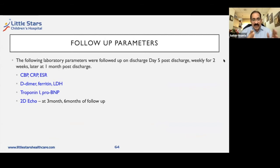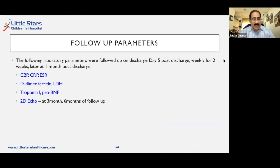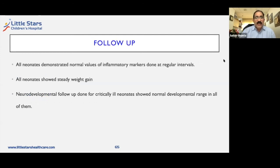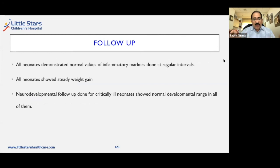These are all the children. Our follow-up parameters include on discharge, day 5 post-discharge, weekly for two weeks, and then monthly: CBC, CRP, ESR, D-dimers, ferritin, LDH, pro-BNP, and 2D echo at three months and six months. All the inflammatory markers have normalized and they're showing steady weight gain. To date, all the neurodevelopmental follow-up for all these children has been good.